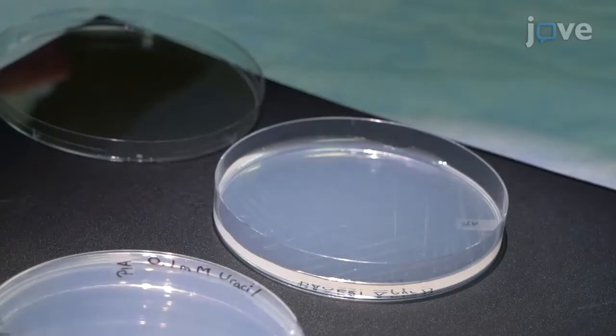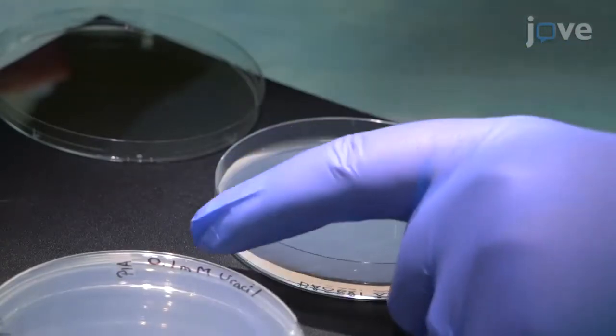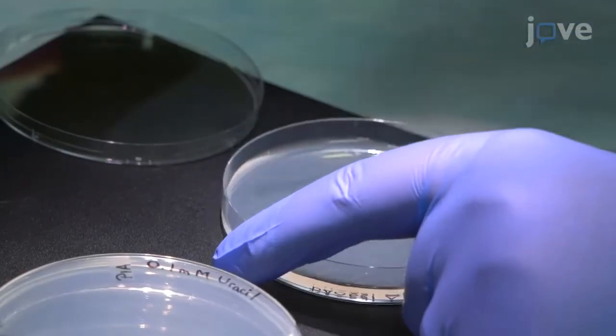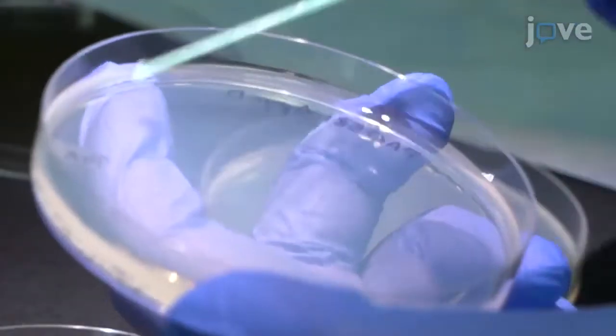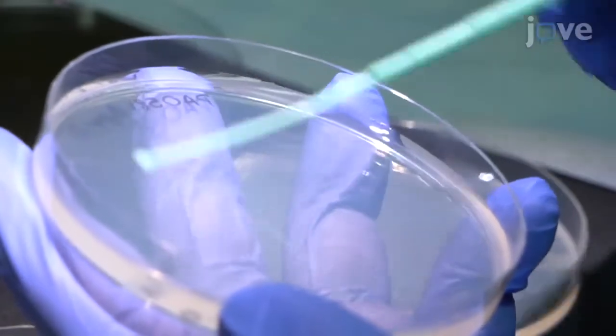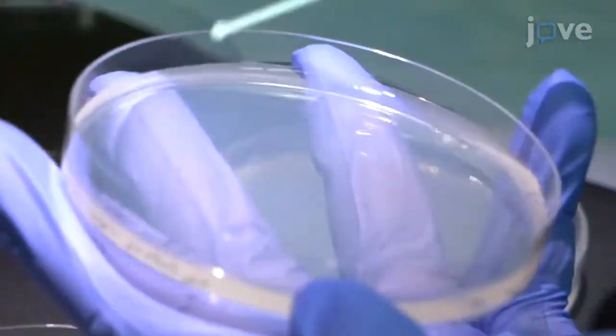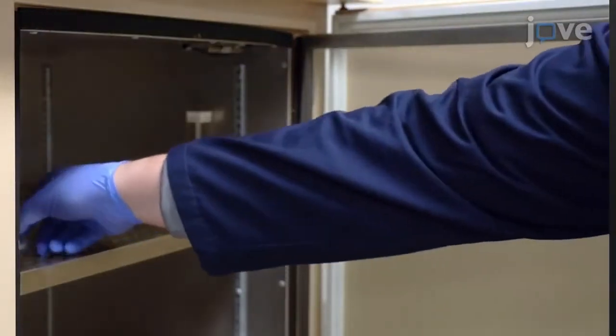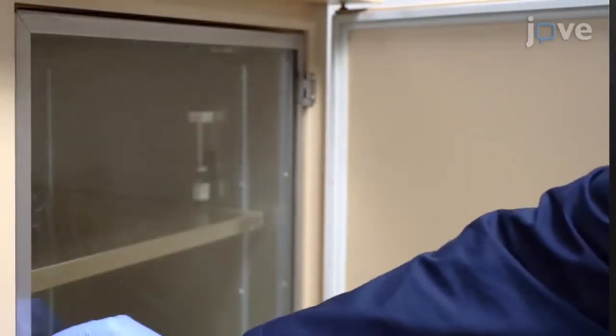To perform physiological activation of the salvage pathway, use a sterile inoculation loop to pick the SCV colony from the PIA plate. Streak the selected colony on a pre-warmed PIA plate supplemented with 0.1 mM uracil. Grow the plate at 37 degrees Celsius for 24 to 48 hours.